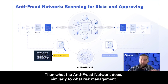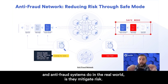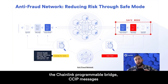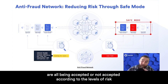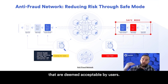What the anti-fraud network does, similarly to what risk management and anti-fraud systems do in the real world, is mitigate risk. They manage risk in order to make it so that the Chainlink messaging protocol, the Chainlink programmable bridge, and CCIP messages are all being accepted or not accepted according to the levels of risk that are deemed acceptable by users.